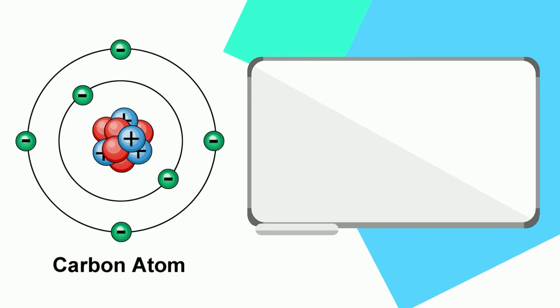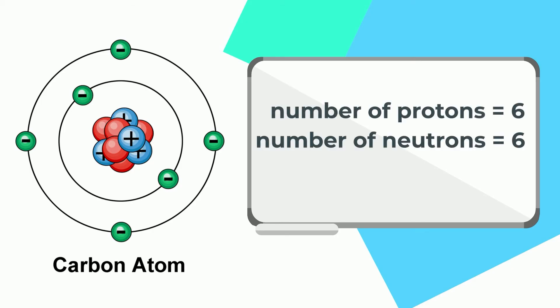For instance, going back to the carbon example, it has 6 protons and 6 neutrons. This will give us a sum of 12 AMU, or 12 grams per mole.